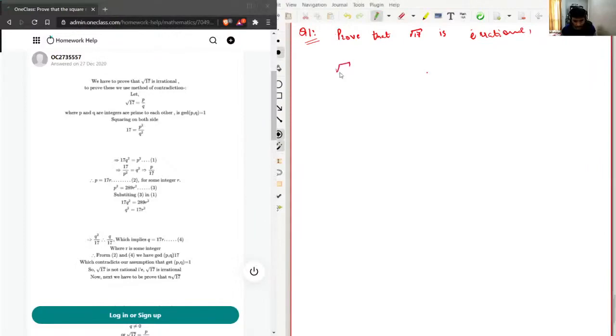Prime integers to each other, that is GCD of P comma Q is equal to 1. Then squaring on both these sides, we'll get 17 equal to P square over Q square. Now I can just multiply Q square on both the sides, so I'll get 17 Q square equal to P square. This is going to be our equation number 1.